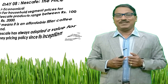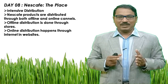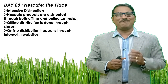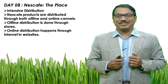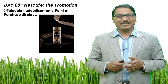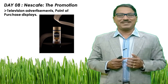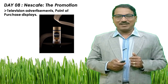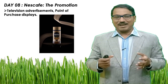The third P is place, which refers to its distribution network. It is intensive distribution for Nescafe. Nescafe products are distributed through both offline and online channels. Offline distribution is done through stores, and online distribution happens through internet websites. The fourth P is promotion. Nescafe, being a global brand, depends on television advertisements and also makes point-of-purchase displays. These are the four P's of Nescafe.